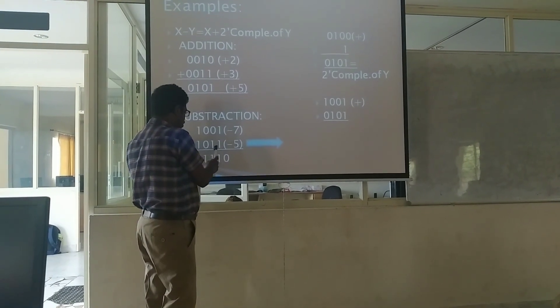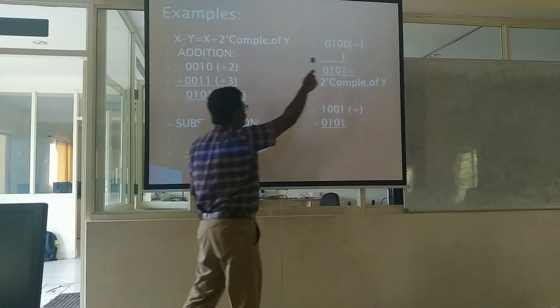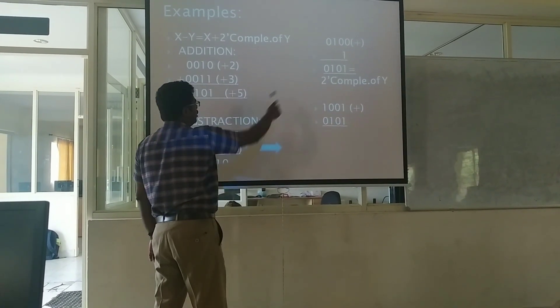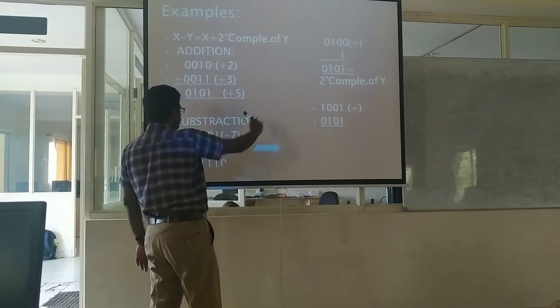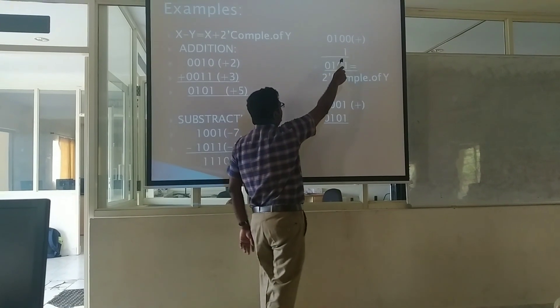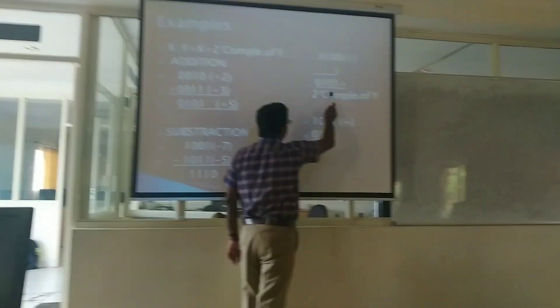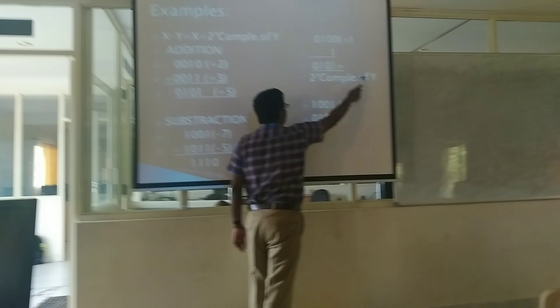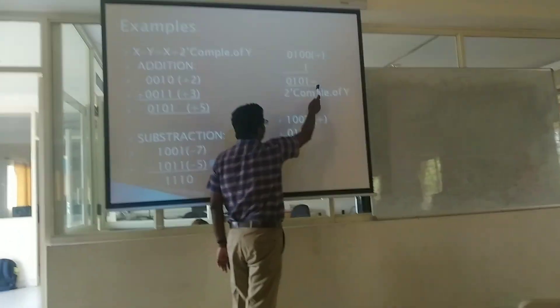So here we have minus 5, so 1011 is there. So what I do, I have to convert to 1's complement. So it becomes 0100. Then I am adding 1, so it will give the answer 0101. This is the 2's complement. So you have to update the value of y, this is the final answer of y here.